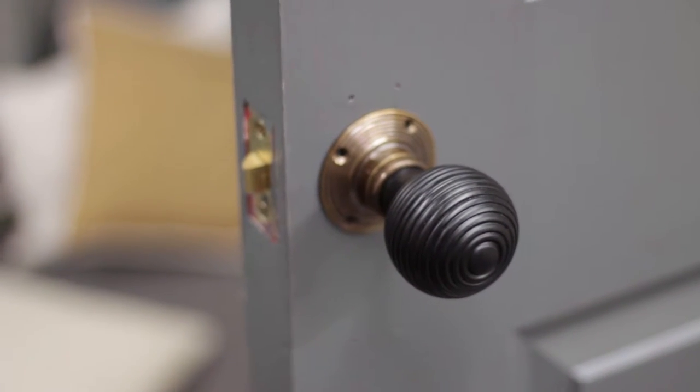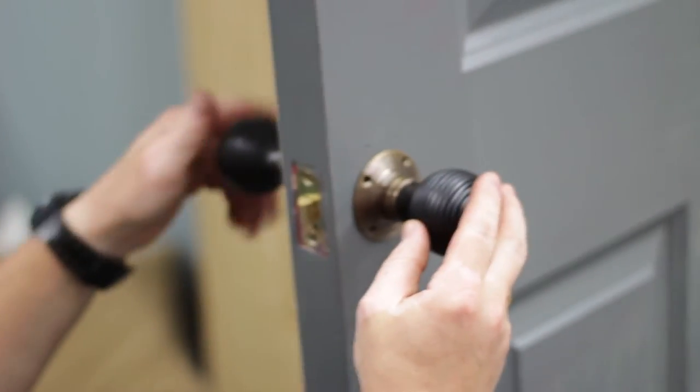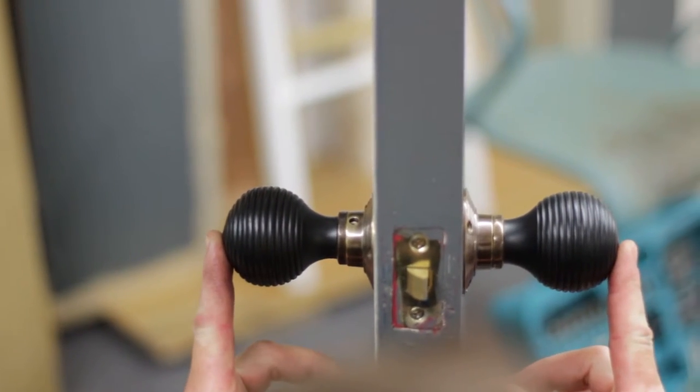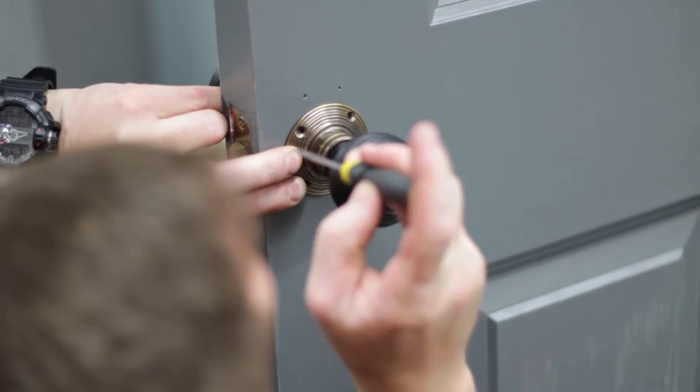Place the spindle through the door and place the two roses and knobs onto it. Once you are happy with the placement, mark out the fixing holes for the roses then remove the set from the door.